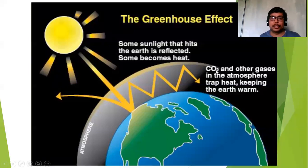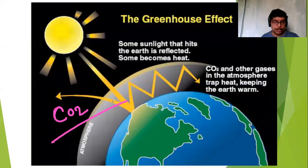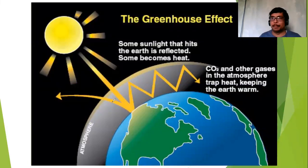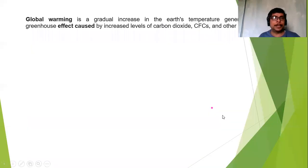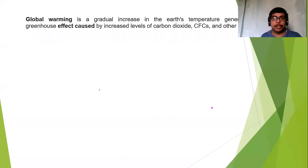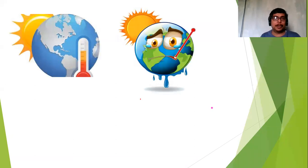Which gases are greenhouse gases? CO2, that is carbon dioxide, is one of them. Carbon dioxide is the prominent greenhouse gas. Sometimes, slowly and gradually, CO2 increases on earth and the earth's temperature rises. This is what we call global warming.